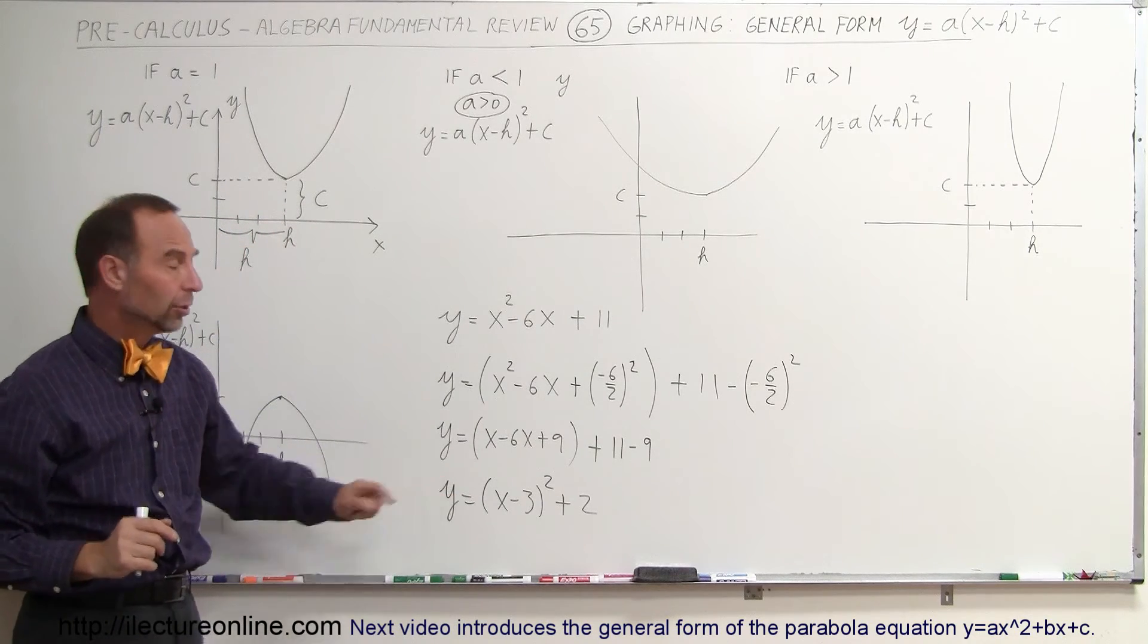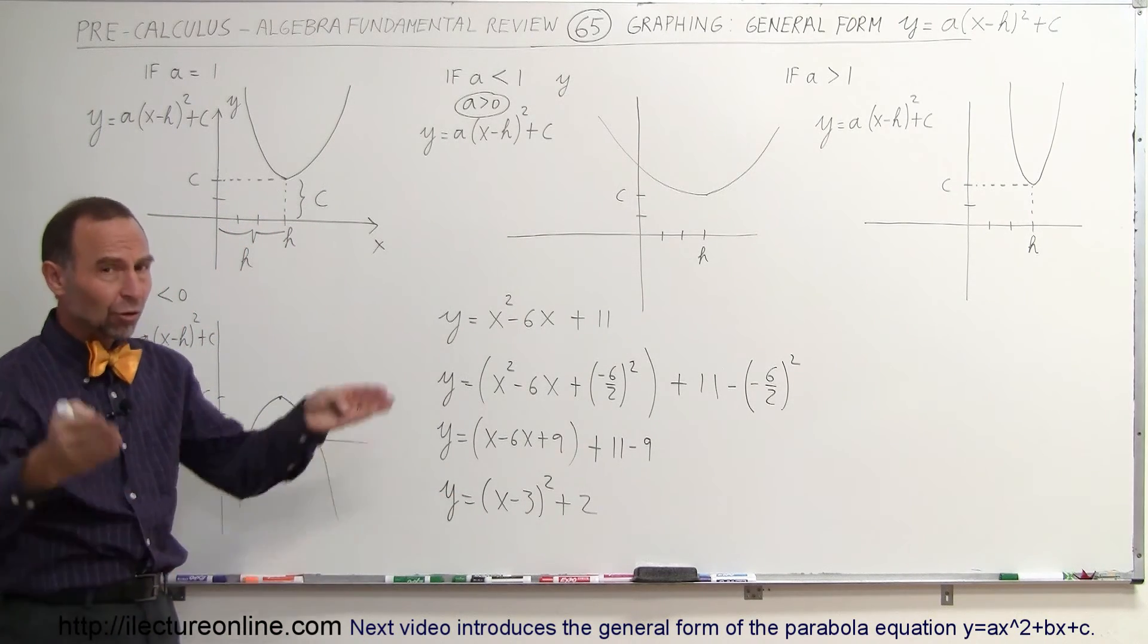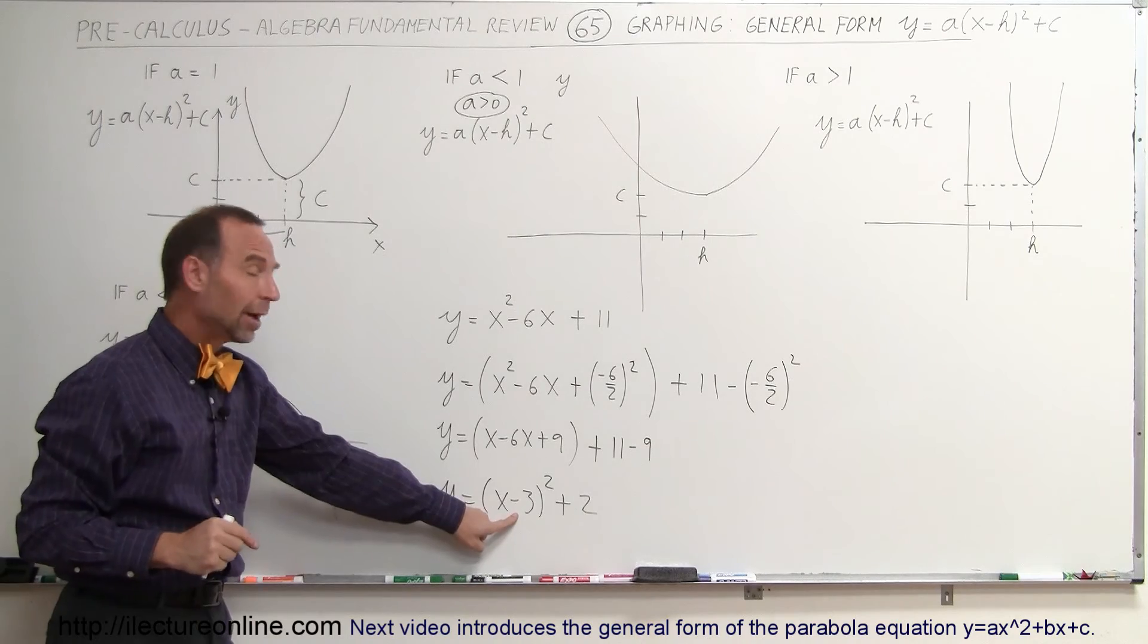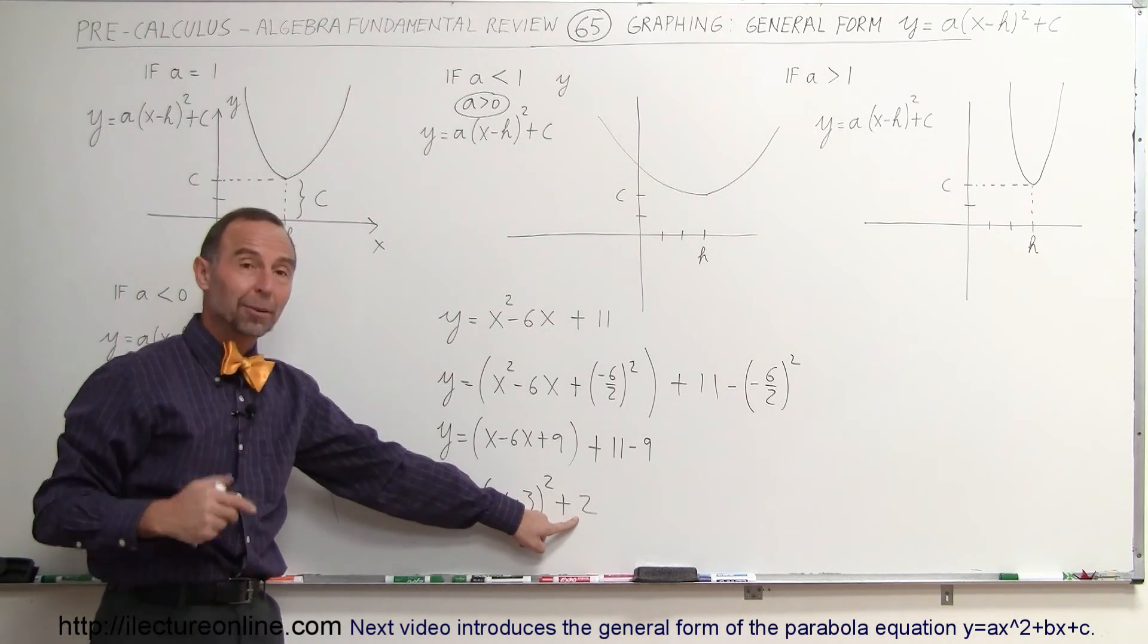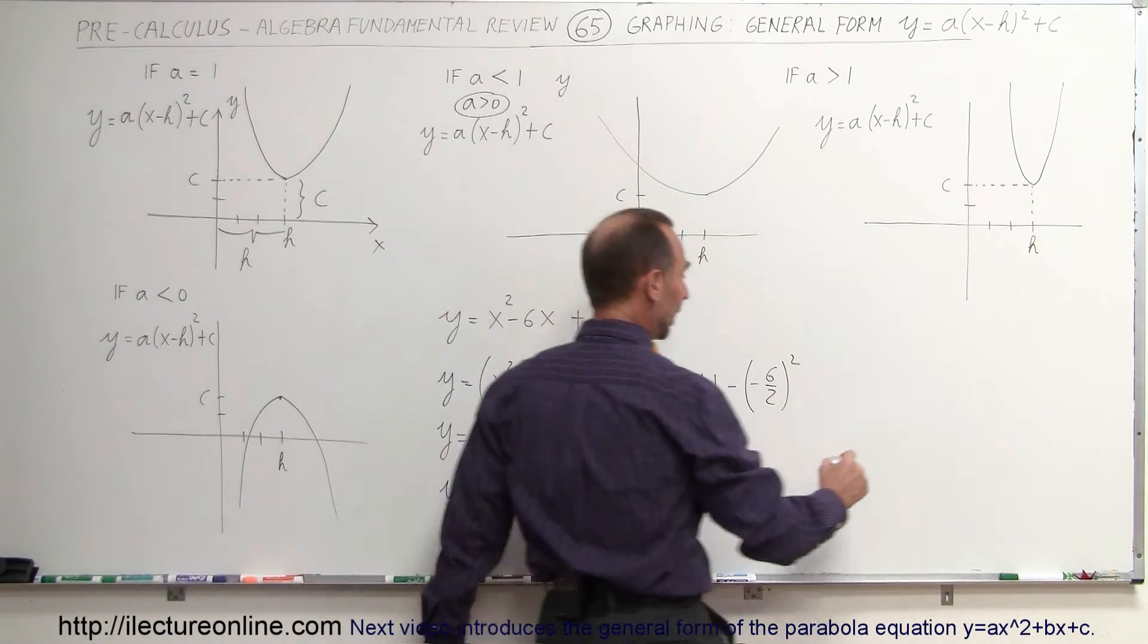Notice that a is equal to 1, the coefficient a. It's positive, means it opens upward. It's shifted to the right by 3 units, and it's shifted up by 2 units. So that equation will now look like this.